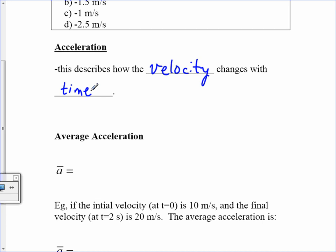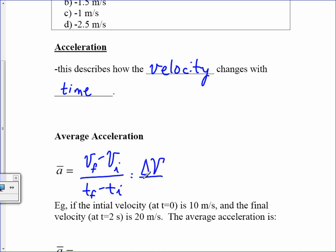Your acceleration is how your velocity changes with time. Velocity is how displacement changes with time; acceleration is how velocity changes with time. As such, the definitions are pretty much the same. The average acceleration is going to be v_f minus v_i over t_f minus t_i, or delta v over delta t.